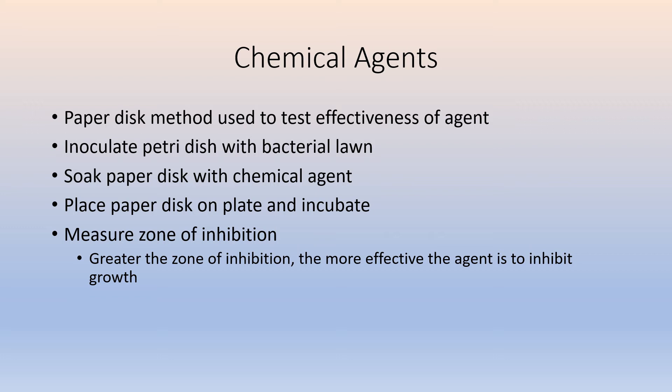The zone of inhibition is that area around the disc where there is no growth. For some chemicals there may not be a zone of inhibition — you may have growth right up to the disc. Others may have a fairly large area where there's no growth. The greater that zone of inhibition, the more effective that agent is, because the chemical has diffused out into the medium and inhibited the growth.